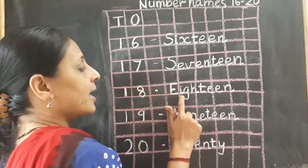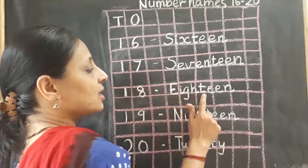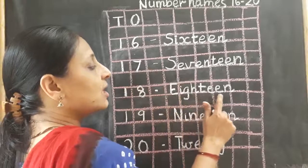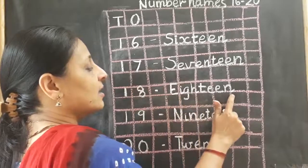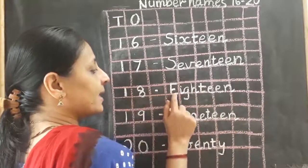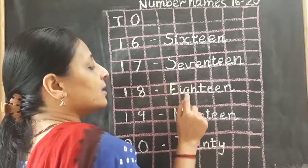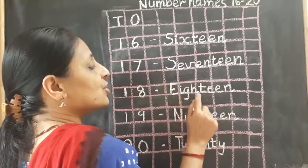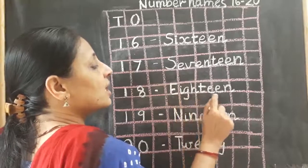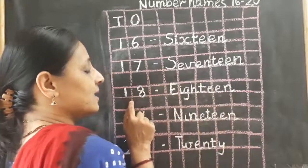E, I, G, H, T, E, E, N. 18. Once again: E, I, G, H, T, E, E, N. 18.